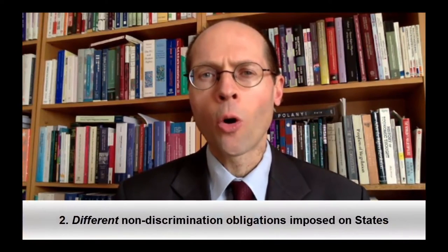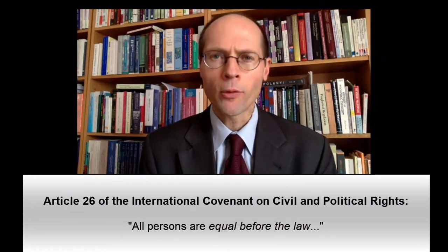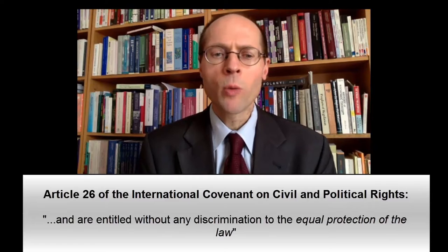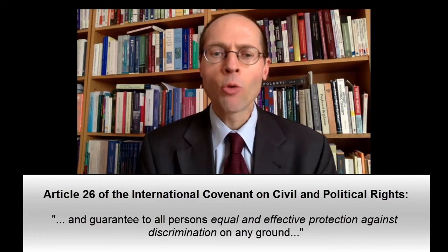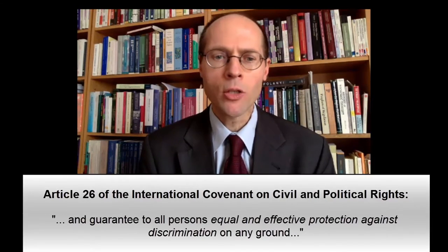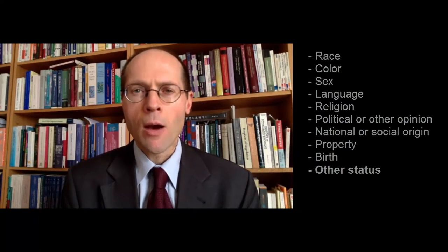Secondly, we will examine the norms imposed on states under the general chapeau of non-discrimination. One good example of how complex the norm can be is Article 26 of the International Covenant on Civil and Political Rights. Article 26 of the ICCPR states: all persons are equal before the law and are entitled without any discrimination to the equal protection of the law. In this respect, the law shall prohibit any discrimination and guarantee to all persons equal and effective protection against discrimination on any ground such as race, color, sex, language, religion, political or other opinion, nationality, national or social origin, property, birth, or other status. Article 26, in its two sentences, in fact imposes four distinct requirements on states.